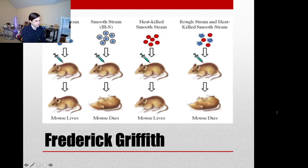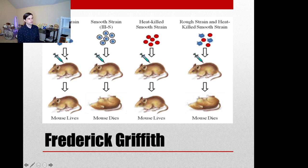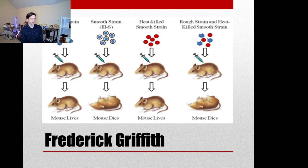This is the famous Frederick Griffith experiment. He took two versions of the bacteria: the rough strain, which lacks a capsule, and the smooth strain, which has one. When he injected the rough strain into a mouse, the immune system simply destroyed it — the mouse was fine and no bacteria were found on autopsy. The rough strain can't evade the immune system without a capsule, so it causes no disease.